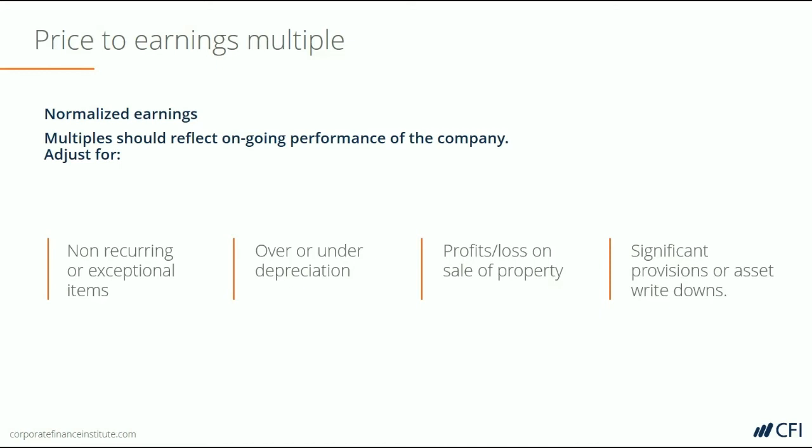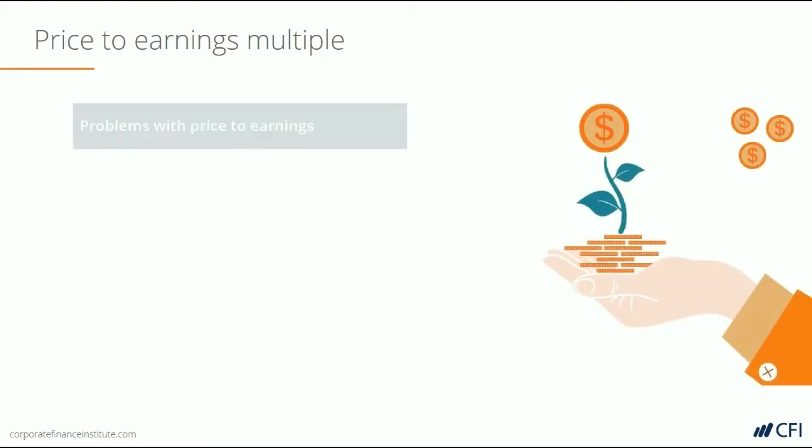And finally, if there were any asset impairments or write-downs, those would also be backed out, as they are one-time, non-cash expenses and therefore normalized out of earnings.